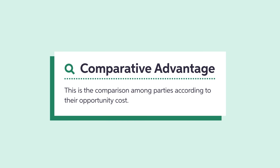Economists can rank different parties, such as producers, companies, or countries, based on their opportunity cost. The party that has a smaller opportunity cost to produce a good has the comparative advantage to produce that good. This is because the party gives up less of other productions.